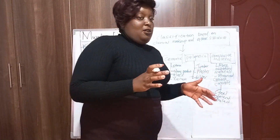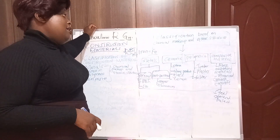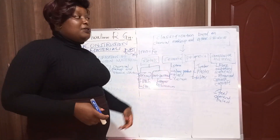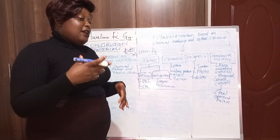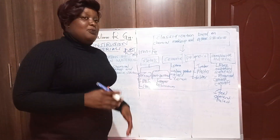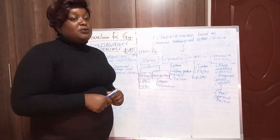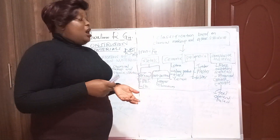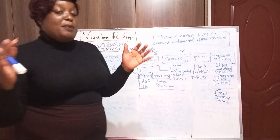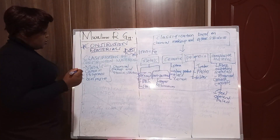So in summary, the classification of construction materials: metals are classified as ferrous and non-ferrous; ceramic materials are brittle, like stone, clay products, and glass; polymeric materials are made up of organic molecules; and composite materials are a combination of construction materials.